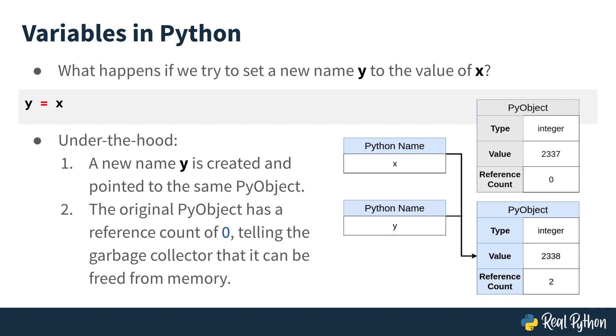If I said something like y is x in the interactive shell, it would return true. This is because the is operator checks to see if two names point to the same memory address, or the same PyObject.